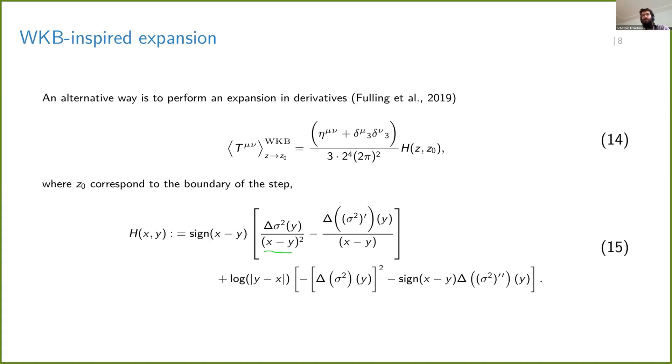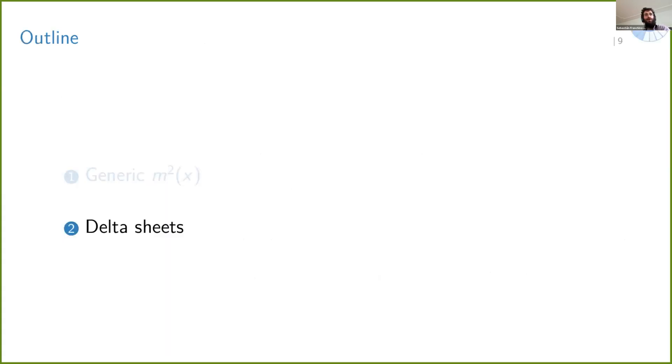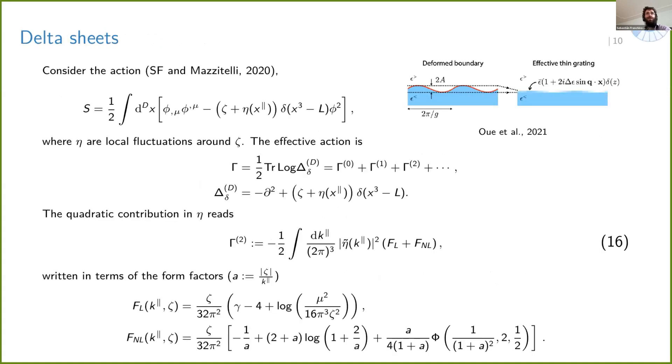Okay, so I guess I have still some time to discuss the other situation that I wanted to share with you, which is the delta sheet situation. In this case, the scalar field is coupled to a variant mass. But in this case, the variant mass is just contained on a surface, on a hypersurface, to properly speak.